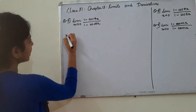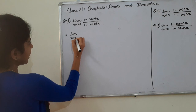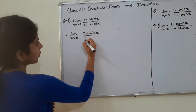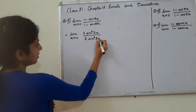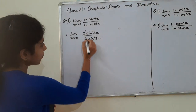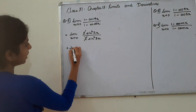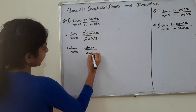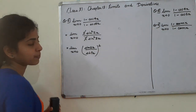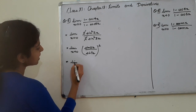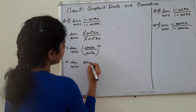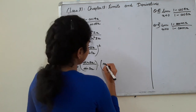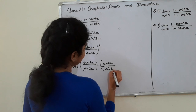So we can solve it. Limit extending to 0, we have 2 sin square 2x divided by 2 sin square 3x. The 2 cancels. So we have limit extending to 0 of sin 2x divided by sin 3x, whole squared.